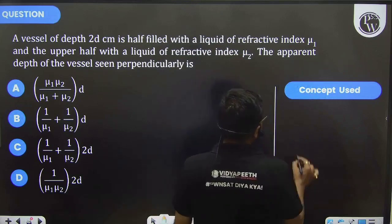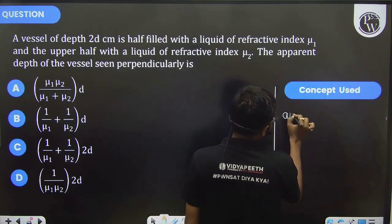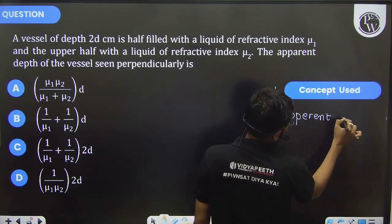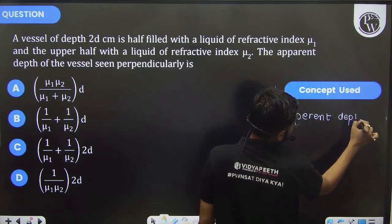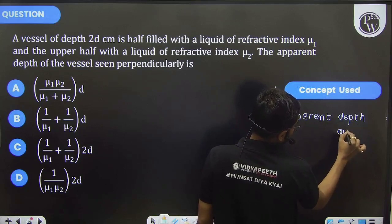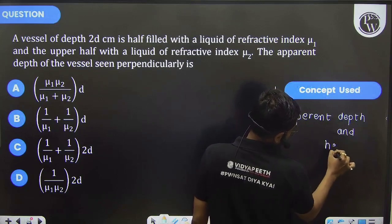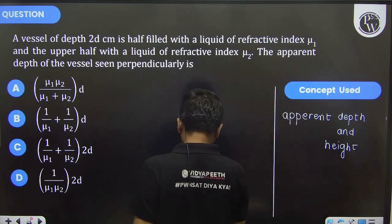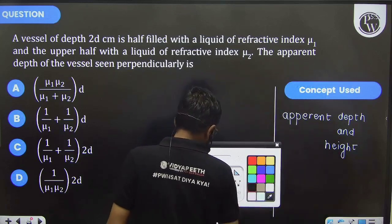So here we have a concept of apparent depth and height. This is the concept which we are going to use. And if you see what the situation you have been given...